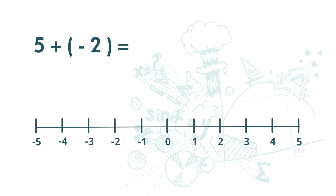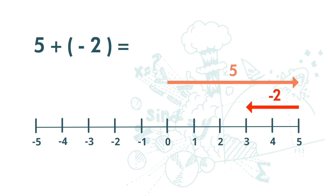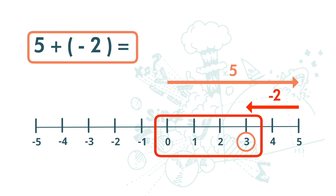Let's look at this question. With positive 5, we move 5 units to the right. With negative 2, we move 2 units to the left. The answer is 3. So here we can see that 5 plus negative 2 is actually 5 minus 2.